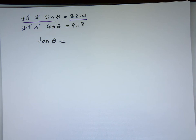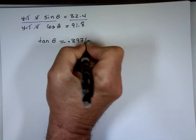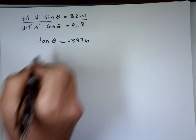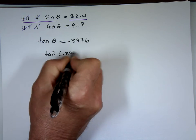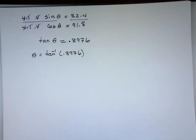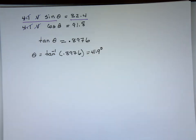Taking the inverse tangent: θ = arctan(0.8976) ≈ 41.9°. All numbers have three significant digits, so θ = 41.9 degrees. Submitting — correct!